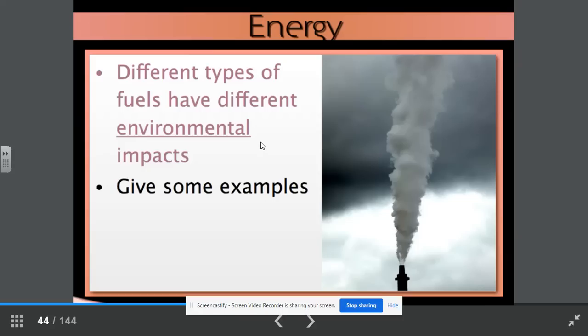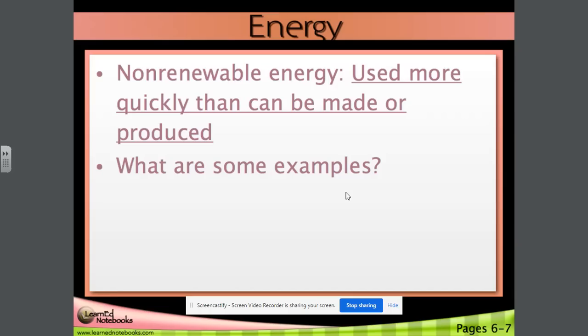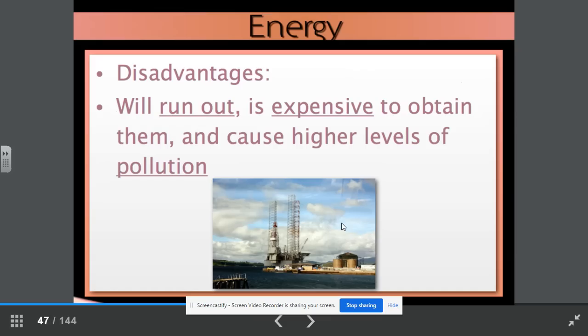Non-renewable energy used more quickly than can be made or produced. What are some examples? We discussed fossil fuels such as natural gas and petroleum and coal. We also talked about nuclear energy. Nuclear energy is considered non-renewable because of its dependence on uranium. Disadvantages. Someday they could run out. It is expensive to obtain them and burning fossil fuels causes higher levels of pollution.